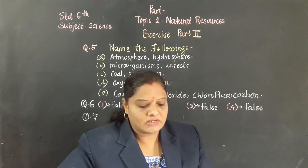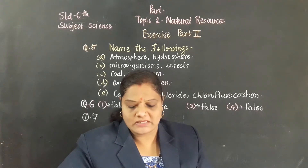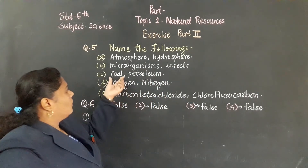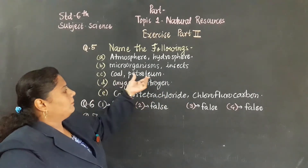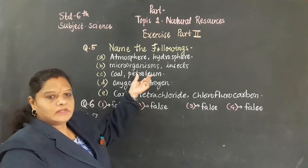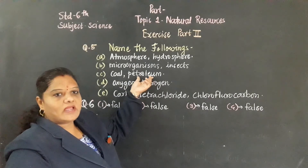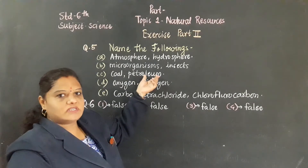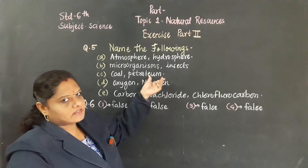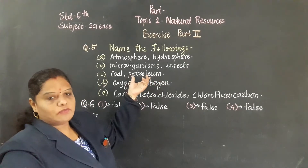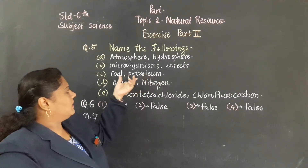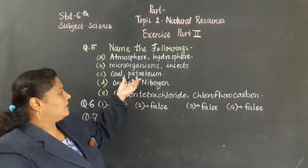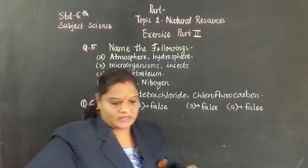C question: fossil fuels. The answer is coal and petroleum. Instead of that you can also write petrol, diesel, kerosene, tar, wax — they are also fossil fuels, but only two names are mentioned here.